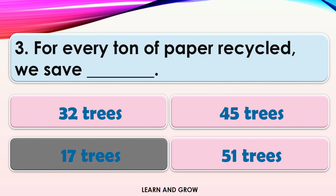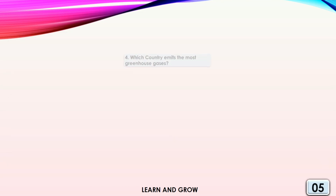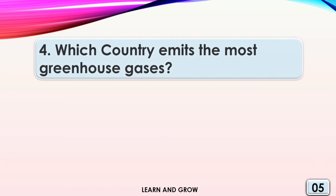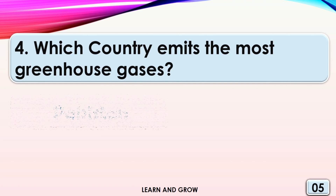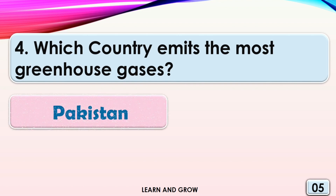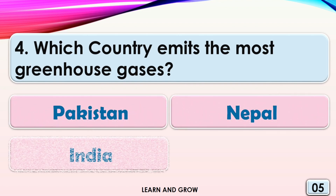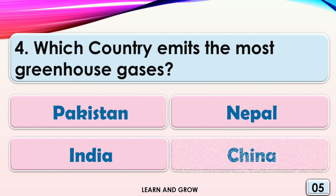The answer is 17 trees. Which country emits the most greenhouse gases? Options are: A, Pakistan; B, Nepal; C, India; or D, China.